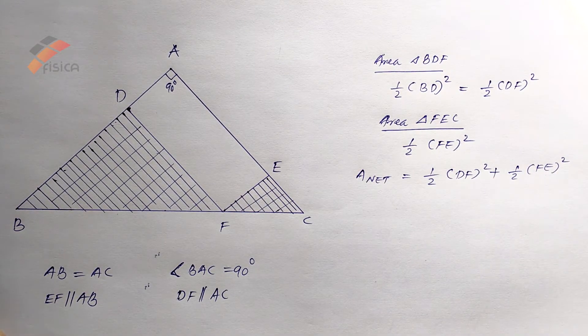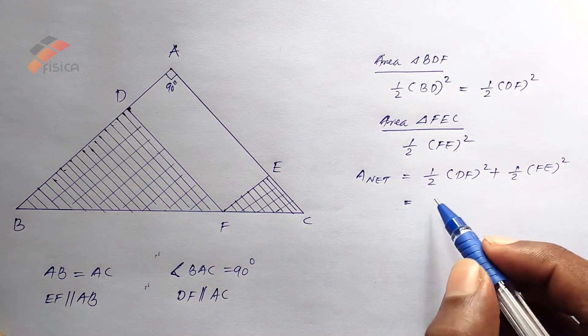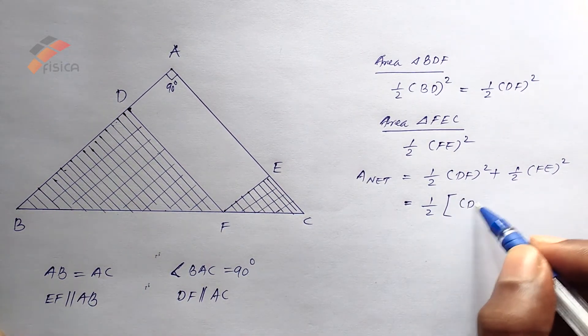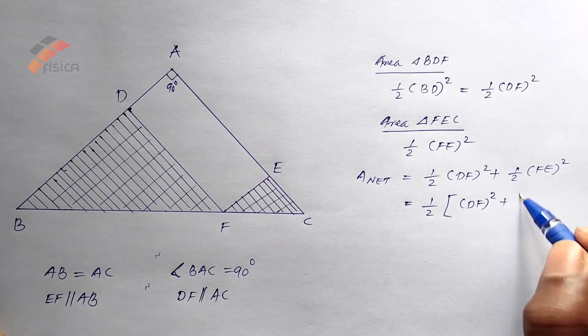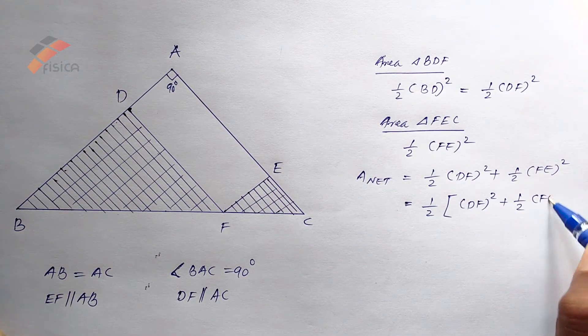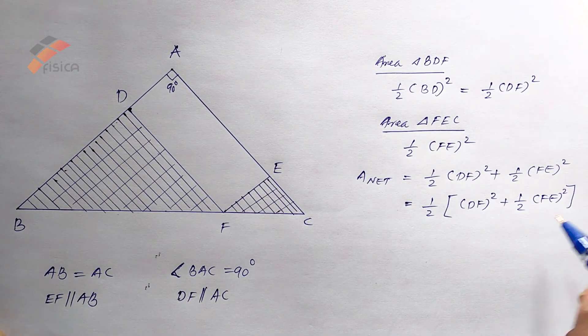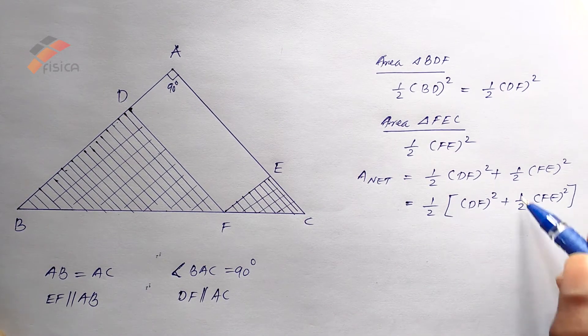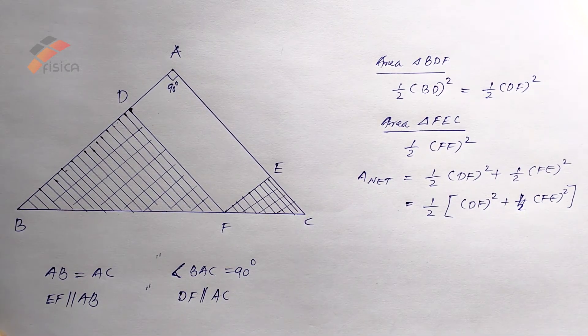I can rewrite it like this, half into DF squared plus FE squared.